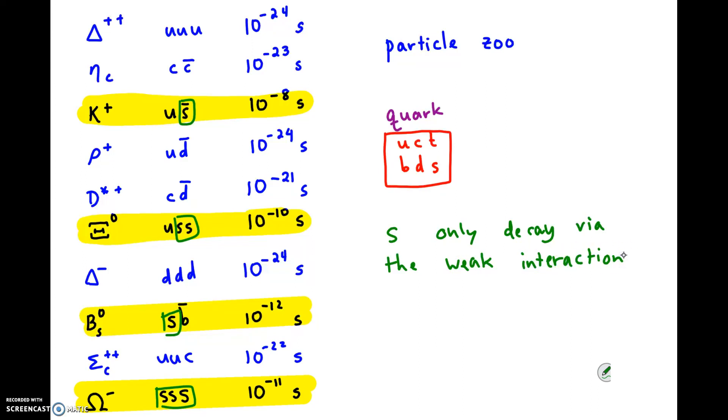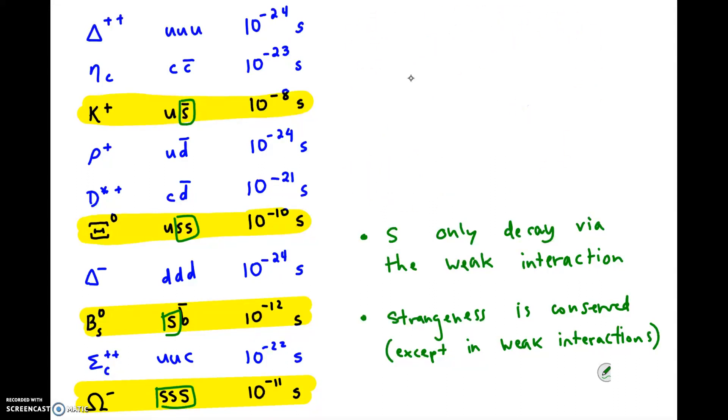And for that reason, we say the strangeness is conserved, except in weak interactions. That was something new, and we thought maybe we should keep track of this property, strangeness. So we're going to count it. We're going to give it a number, we're going to count the strangeness, and here's how we count strangeness.